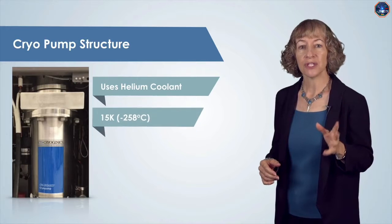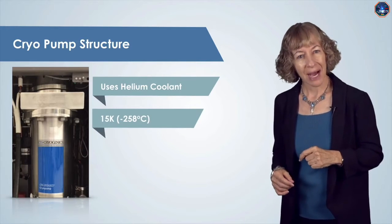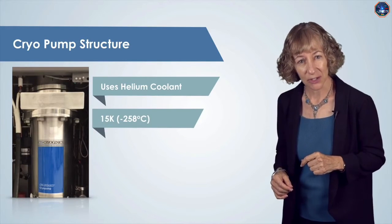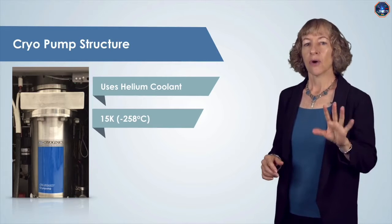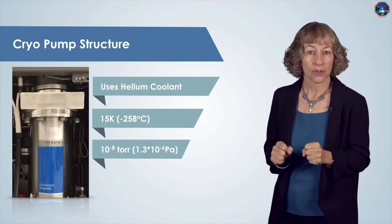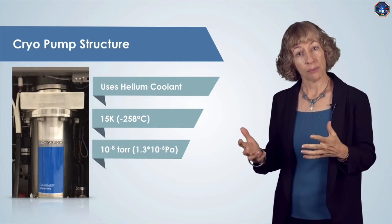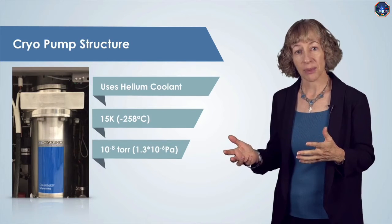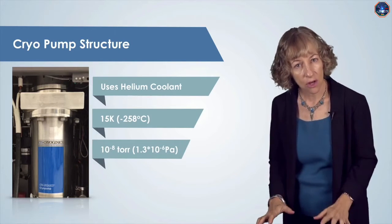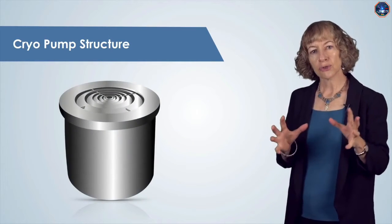A cryo pump can reach pressures down to 10 to the minus 8 torr, or equivalently 1.3 times 10 to the minus 6 pascals, or even lower. The cooled region of the cryo pump has large surface areas because more surface area means more trapped air molecules.